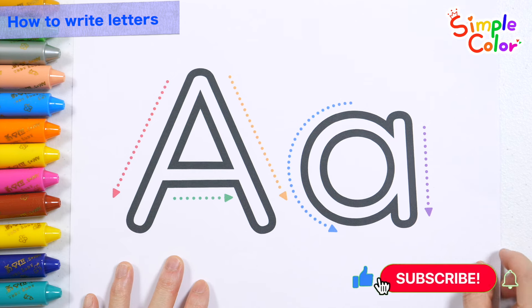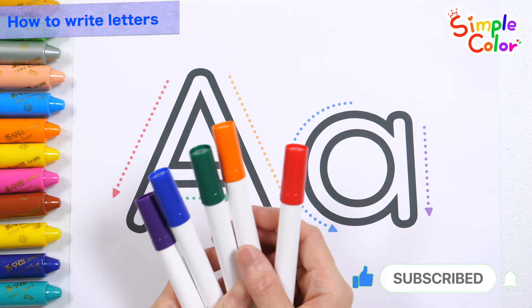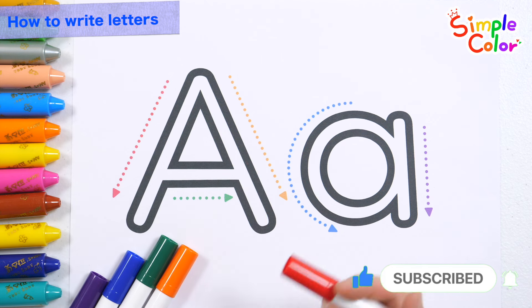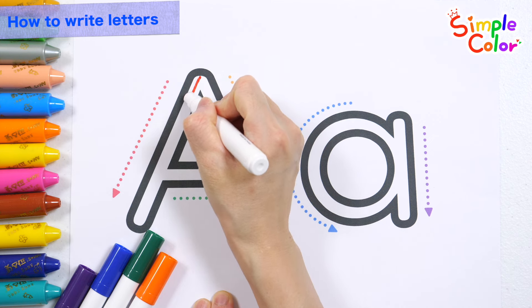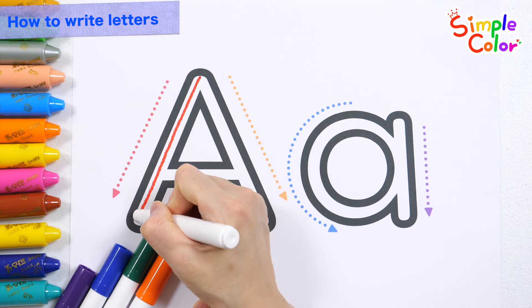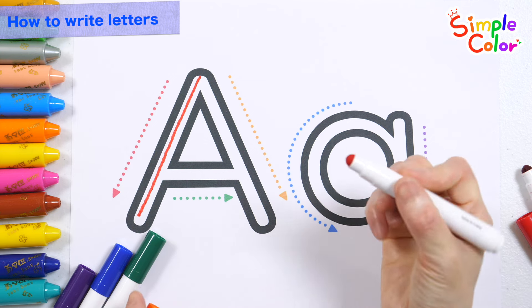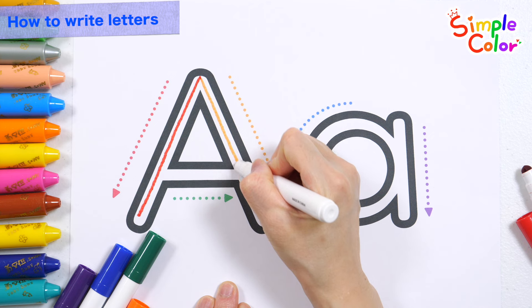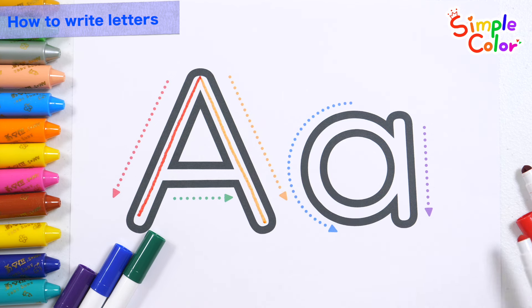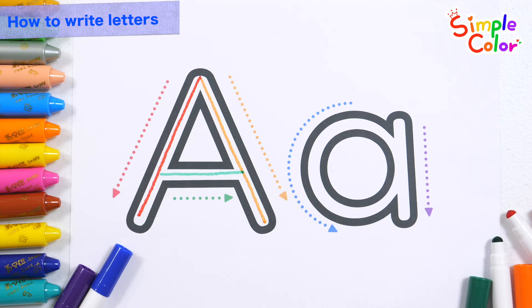Let's write the letters by following the colored arrows. First, follow the red, yellow, and green arrows to write the letters. It's an uppercase A.